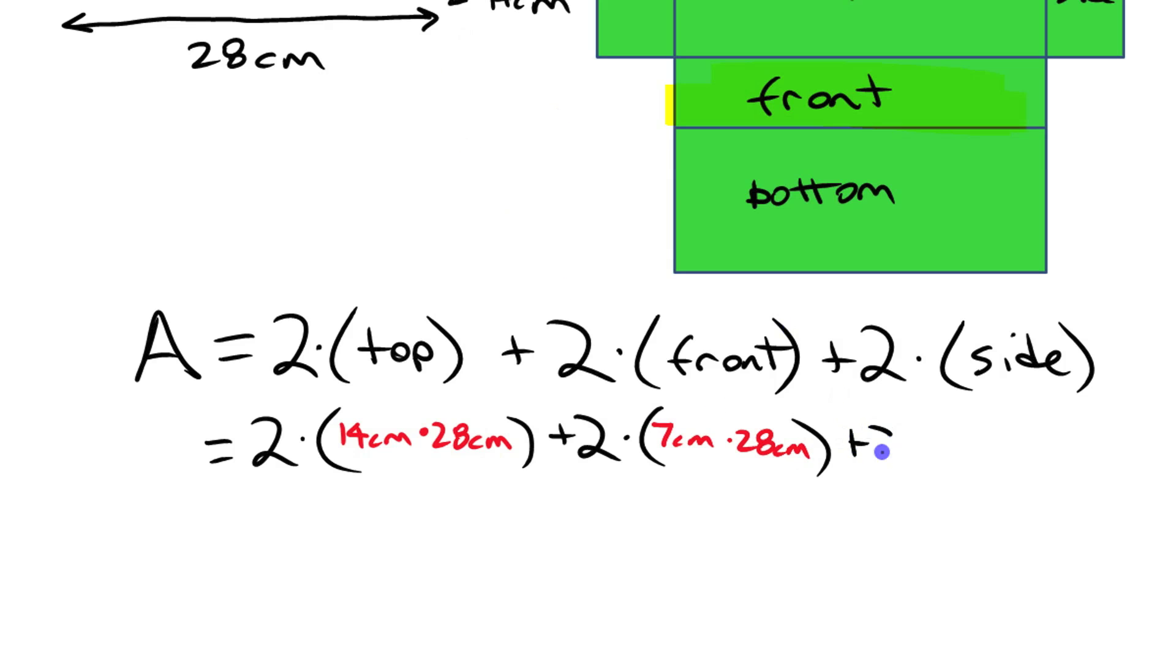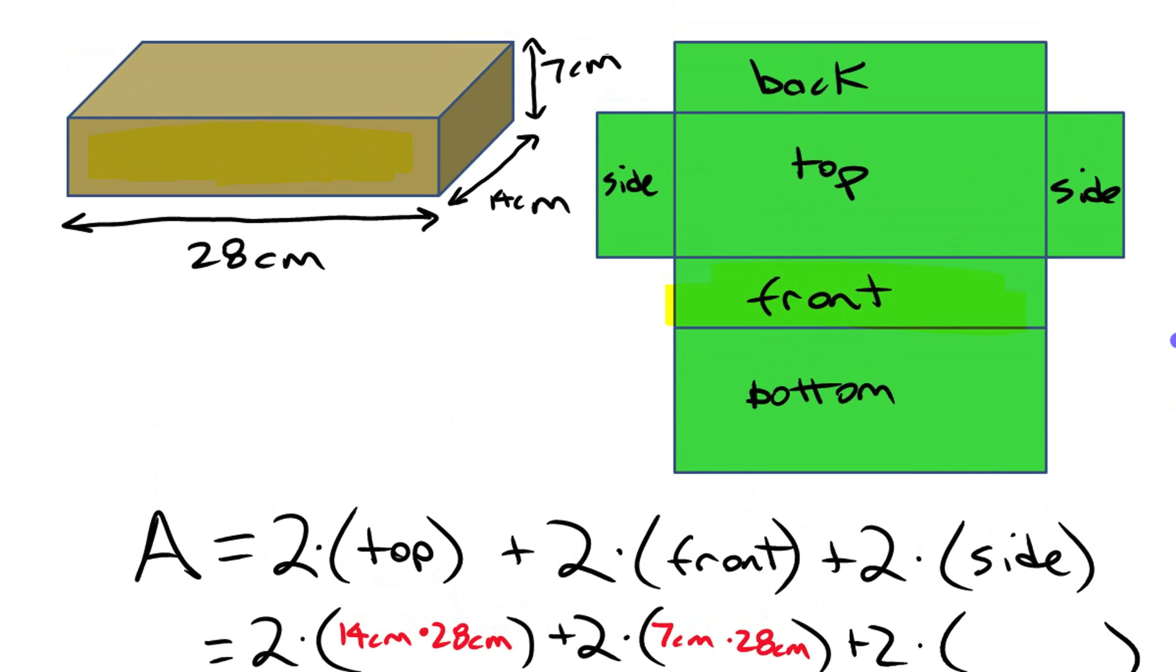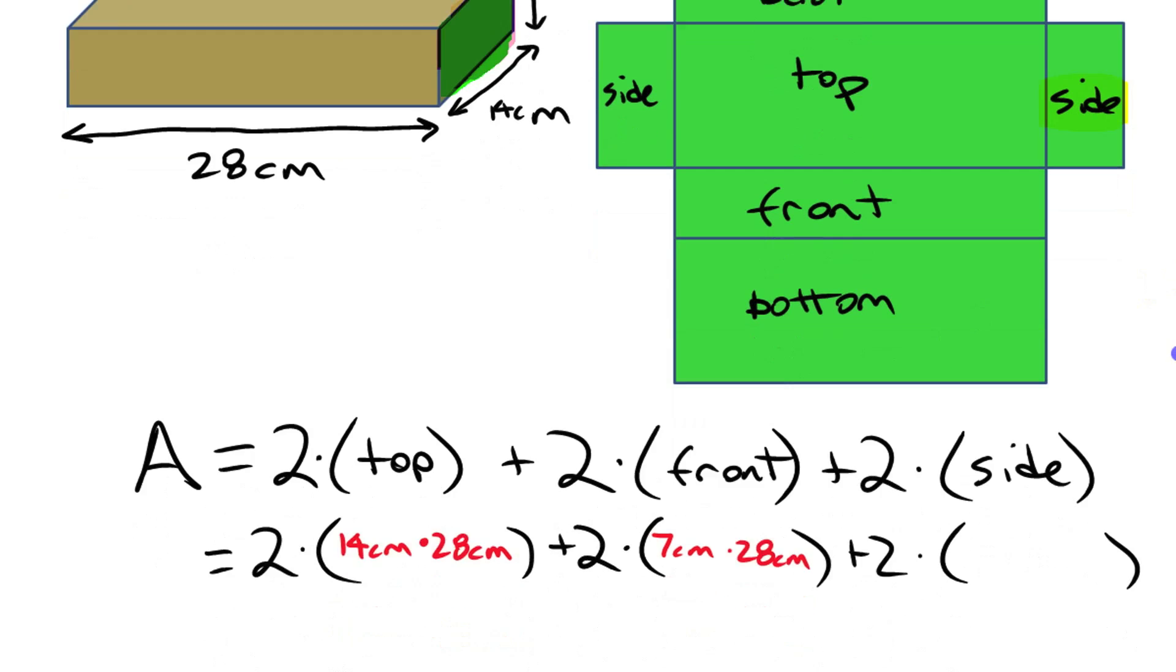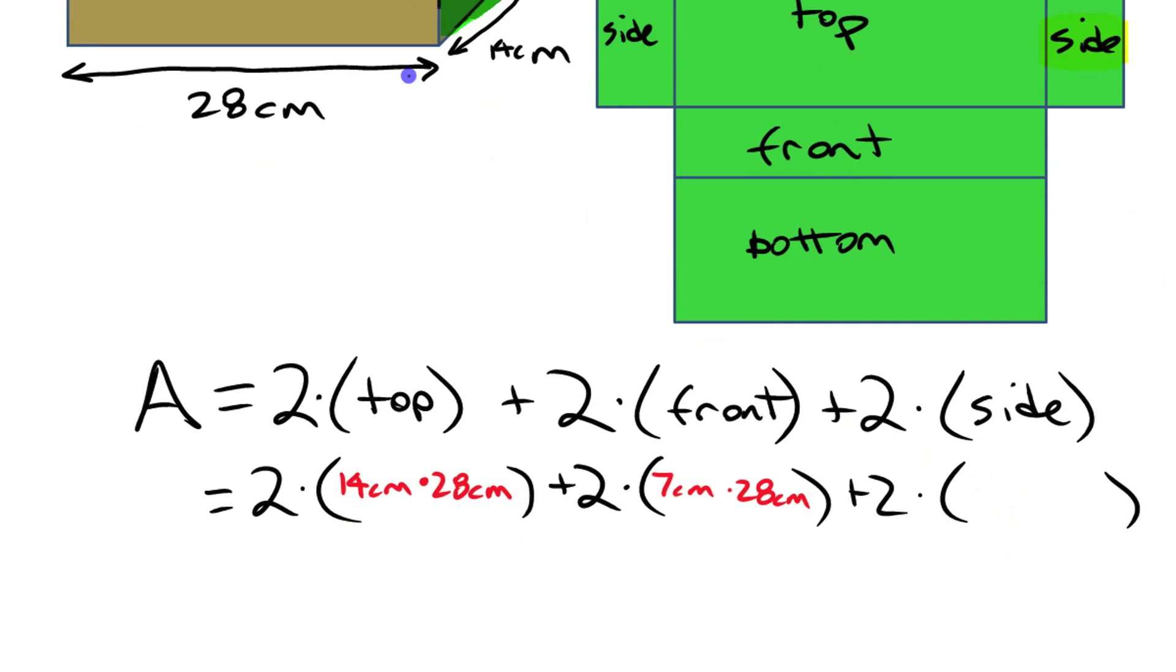And then the third one there, area of the side, it's the remaining pair of dimensions. Okay, the ones that we haven't used together yet. If we're looking at the side, the side's a small one, going to be the smallest two. This side right here, it's this side over here. All right, it's the two short dimensions, 7 times 14. So let's put those in here. 7 centimeters times 14 centimeters.